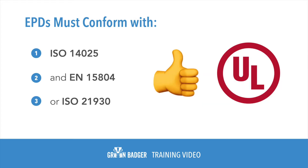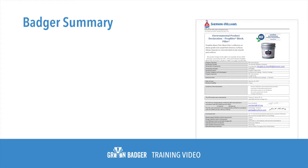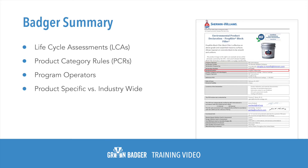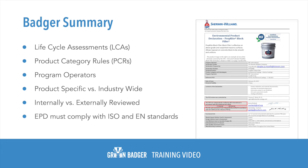Here's looking at you, UL. So to recap: EPDs are independently verified reports based on lifecycle assessment studies. The LCAs must have been conducted according to a set of product category rules and then peer reviewed. The EPDs are managed and created by program operators, which are the organizations that ensure the EPDs meet the requirements, and you can always find that information on the first or second page. You'll need to note whether it is product specific — meaning that it's showing the specific product and brand — or whether it's industry-wide. You'll need to verify whether it was internally or externally reviewed. And finally, you'll want to double-check compliance with all of the ISO and EN standards.